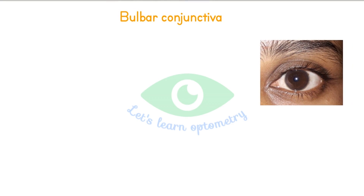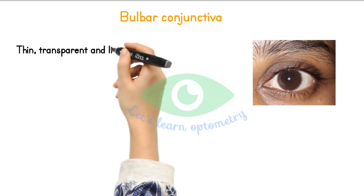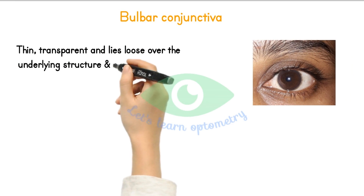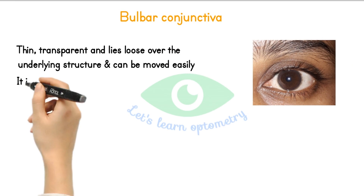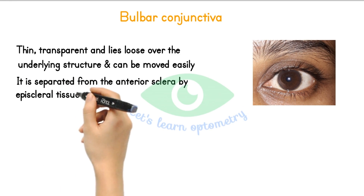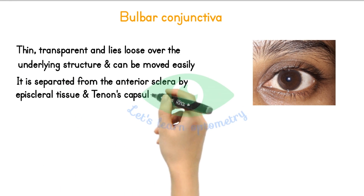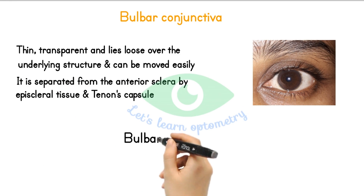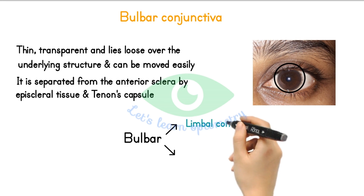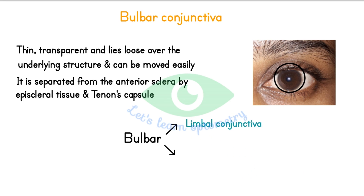Bulbar conjunctiva is thin, transparent, and lies loose over the underlying structure and can be moved easily. It is separated from the anterior sclera by the episcleral tissue and Tenon's capsule. It is subdivided into two types: a 3 mm ridge of bulbar conjunctiva around the cornea is called the limbal conjunctiva, and the remaining portion is called the scleral conjunctiva.